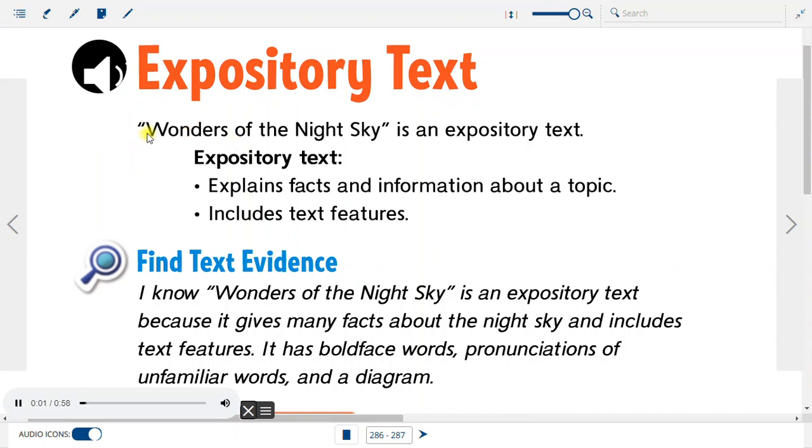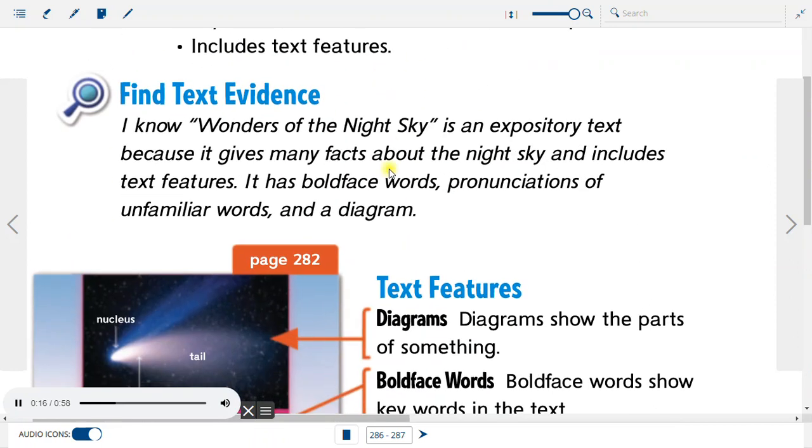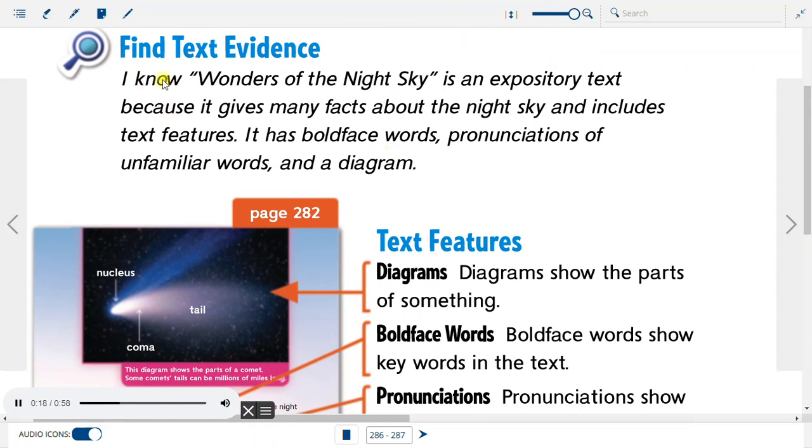Expository Text. Wonders of the Night Sky is an expository text. Expository text explains facts and information about a topic and includes text features. I know Wonders of the Night Sky is an expository text because it gives many facts about the night sky and includes text features. It has boldface words, pronunciations of unfamiliar words, and a diagram.